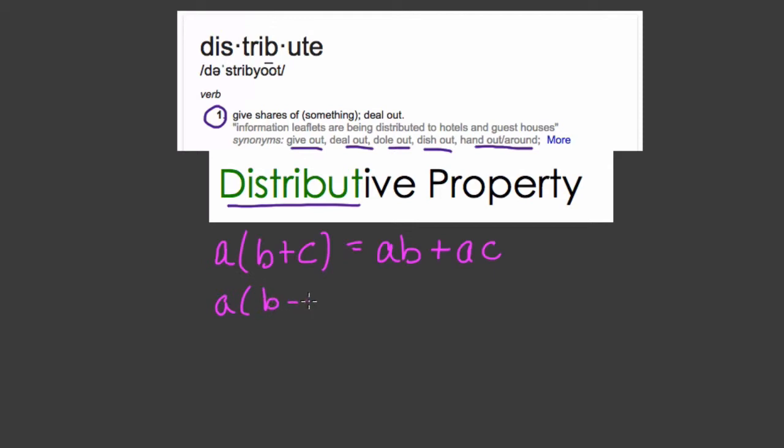Likewise, if we have a times b minus c, that is the same thing as ab minus ac. This is the distributive property of multiplication over subtraction.